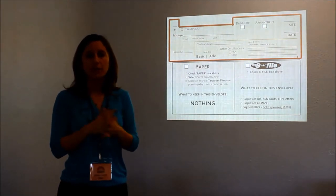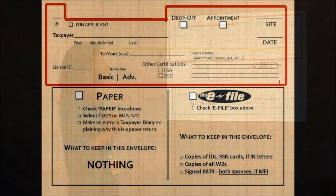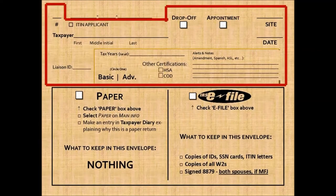Everything else in that top section you as the client liaison will fill out. On the upper right-hand corner you've got the site — for example, HM for Highland Mall, so we know where that return originated. Put today's date. If the client has an appointment or would like to use our drop-off program, there's a checkbox up there to indicate that. In the bottom right of the red box there's a place where you can write any notes helpful for the tax preparer — for example, if a client is deaf or hard of hearing and needs an ASL interpreter, or is a Spanish speaker and would prefer to work with a Spanish-speaking preparer.